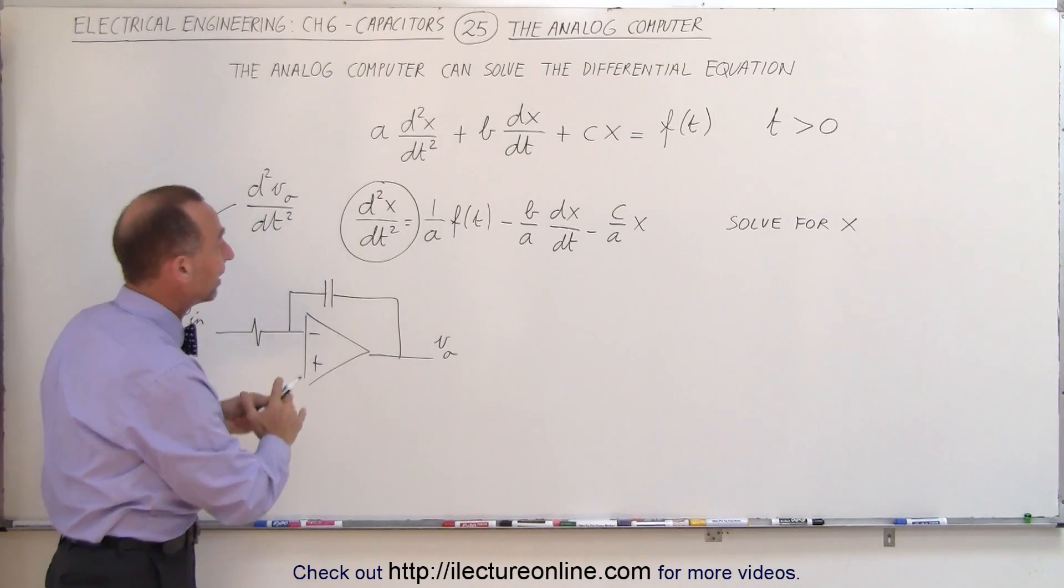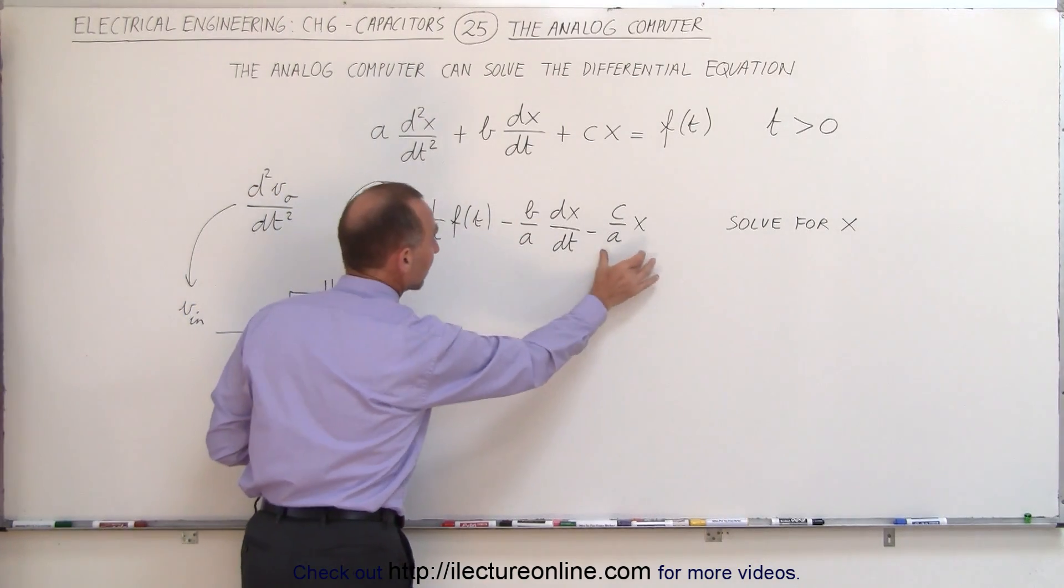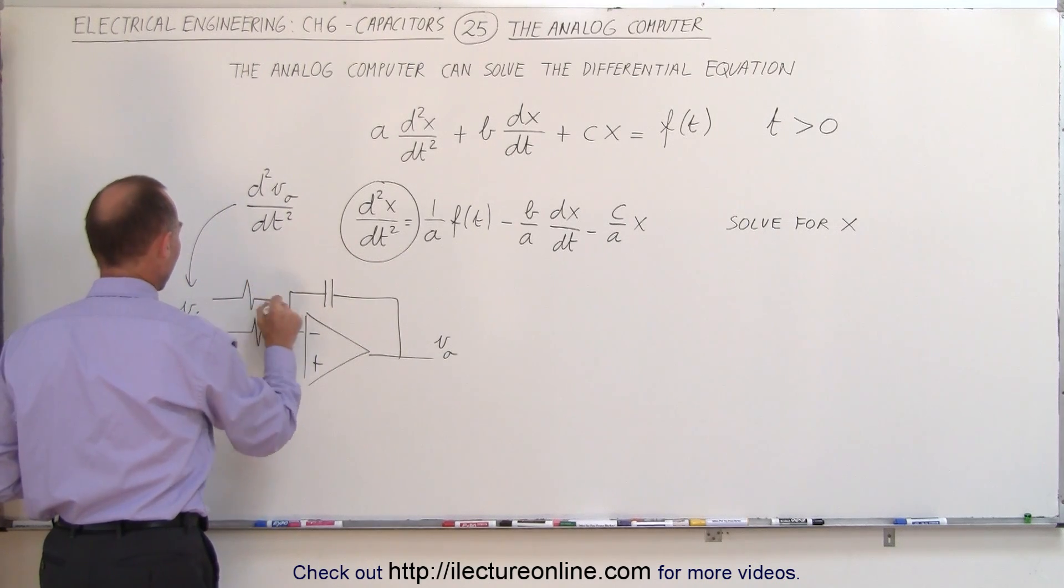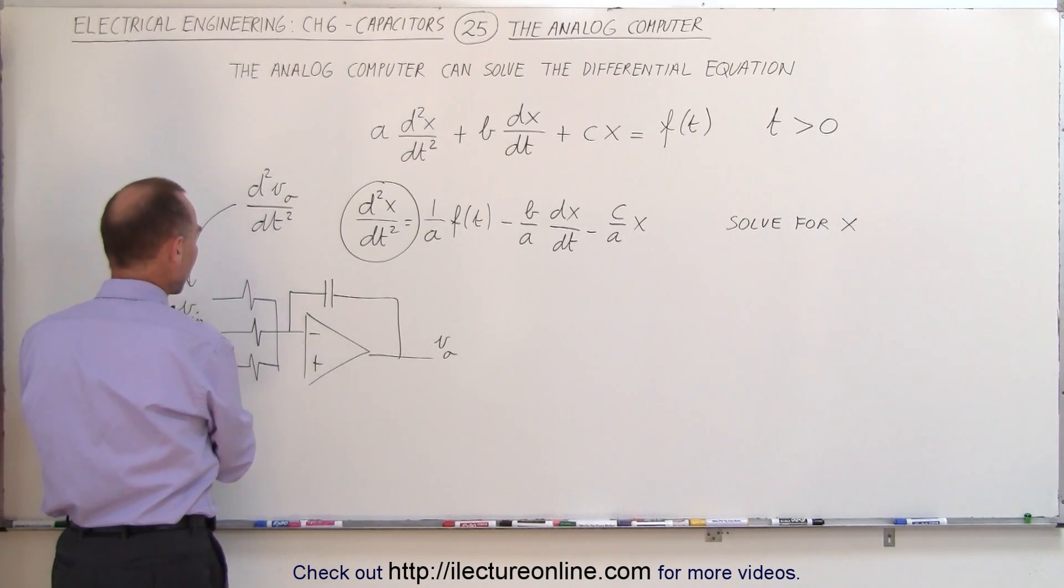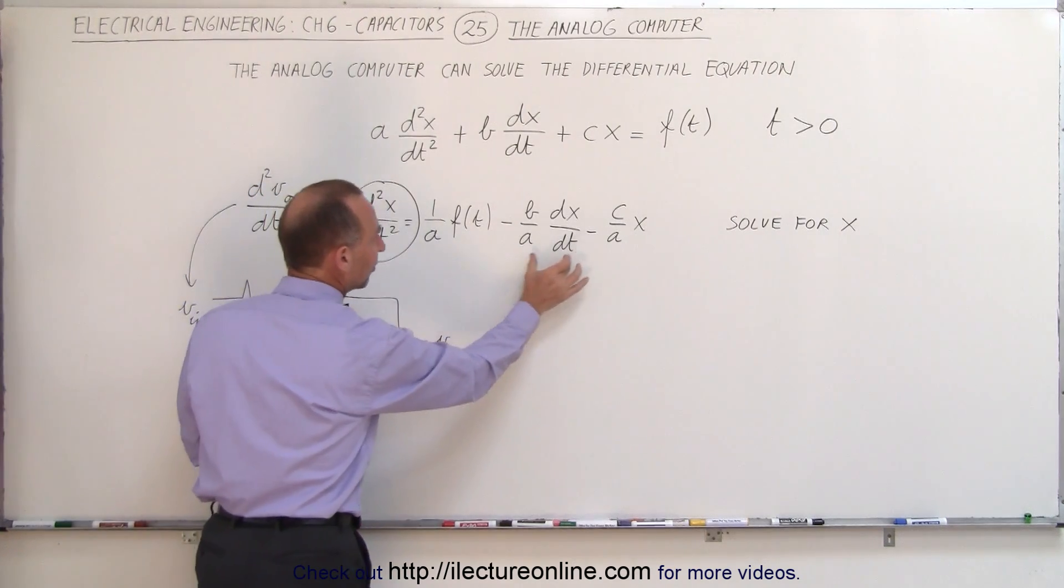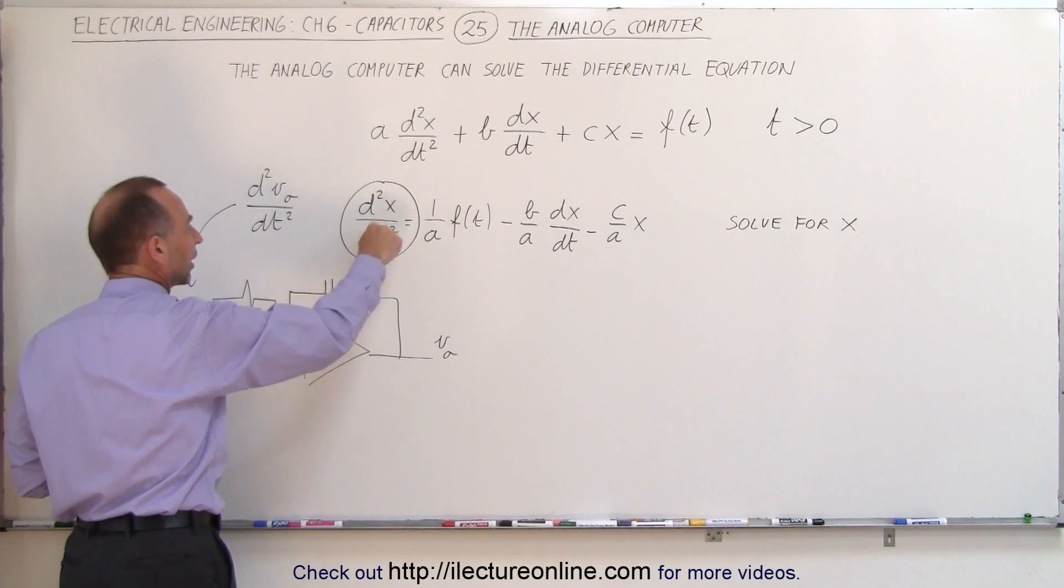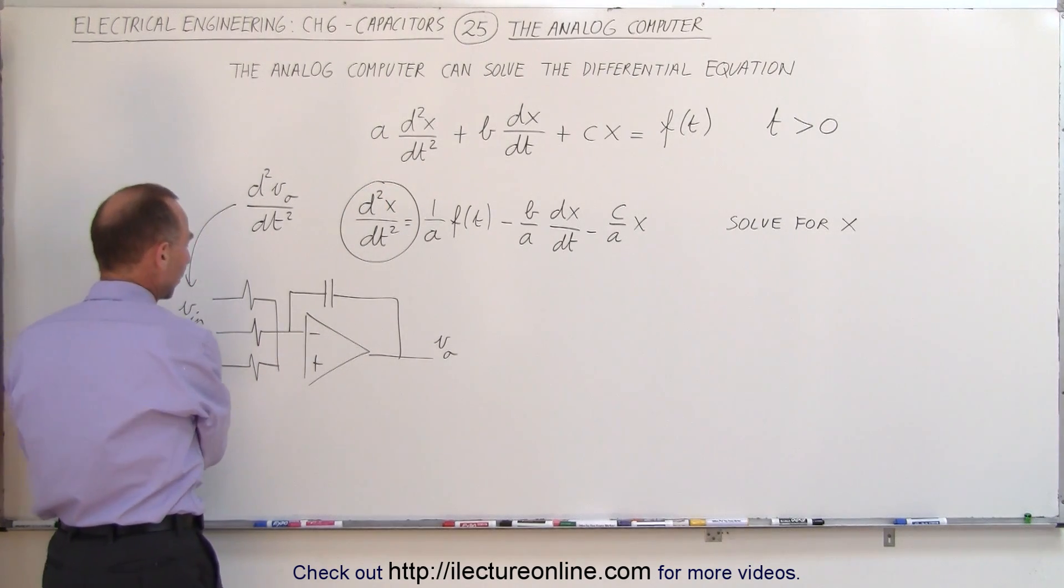Now notice that since this is equal to these three terms right here, we're going to need a summer on this side. We're going to need a summer where we're going to sum the three signals that represent these three terms, which are equal to the second derivative of the output voltage with respect to time.